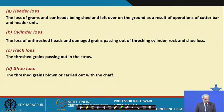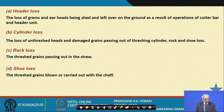Specific loss categories to measure are: header loss, cylinder (threshing) loss, rack losses, and shoe losses. The engineer measures and records all these in tabular form, then certifies whether the machine is acceptable or not based on compliance with the specified values.